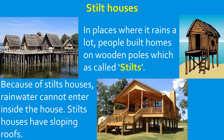Now, stilt houses. In places where it rains a lot, flooding can occur. So people build houses on wooden poles called stilts. The house is raised above the ground level with the help of these wooden poles, as you can see in the picture. Because of stilts, rainwater cannot enter inside the house. Even if there is a flood, the water stays below and the house remains lifted up. Such houses are called stilt houses, and they also have sloping roofs.